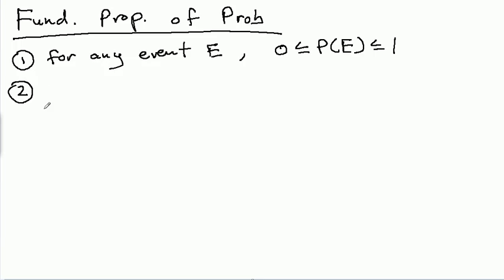For any event, E, the probability of E must be between 0 and 1. It cannot be less than 0 or greater than 1. The probability of 0 means the event will never occur. The probability of 1 means that the event is certain to occur. Obviously, most of the time, the probability of an event is between these numbers, but 0 and 1 are also possible. 2 makes intuitive sense, right?